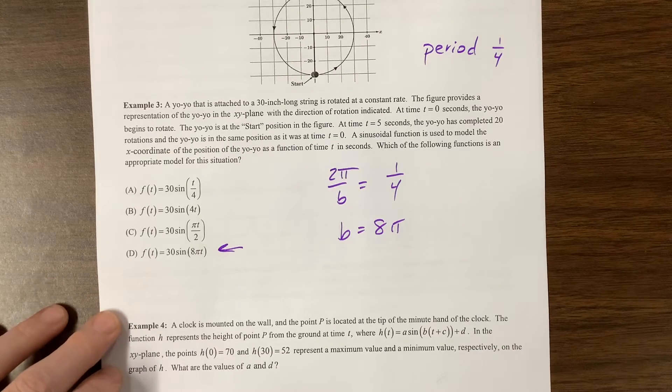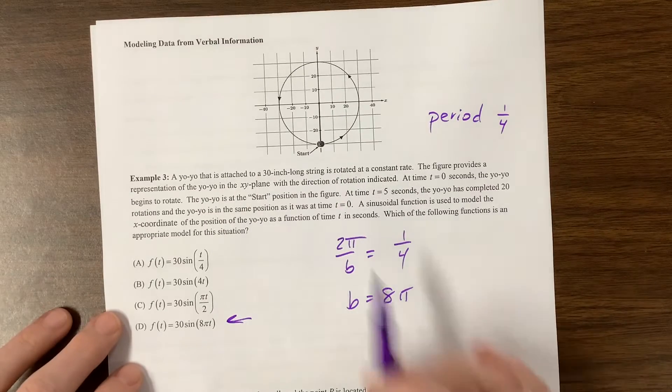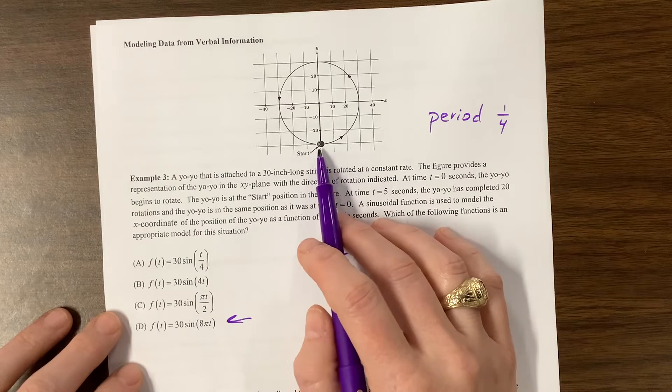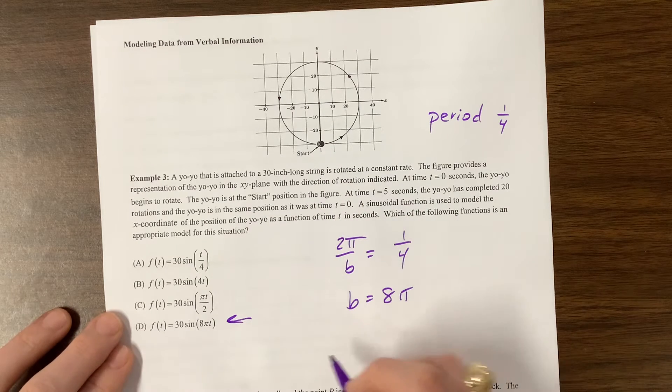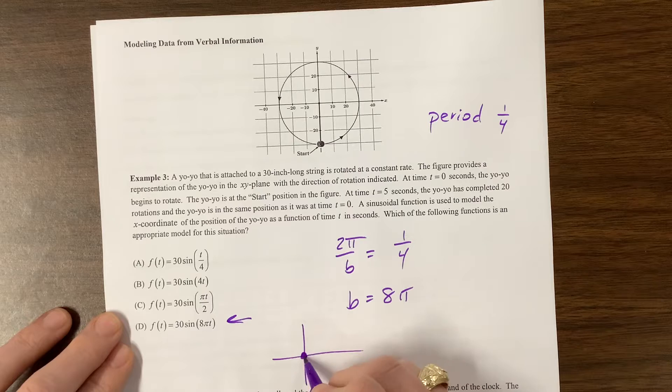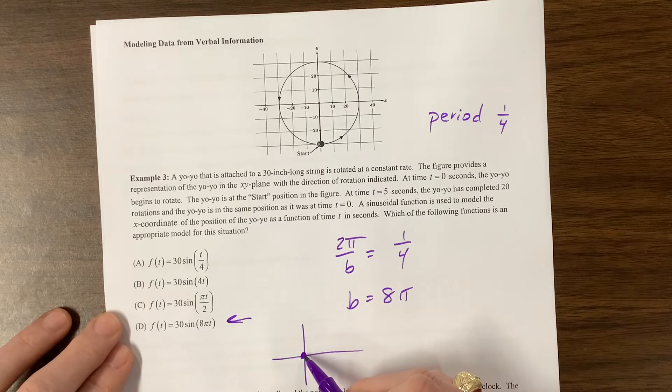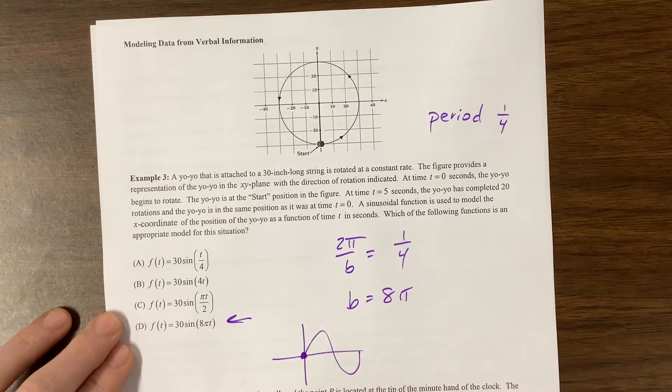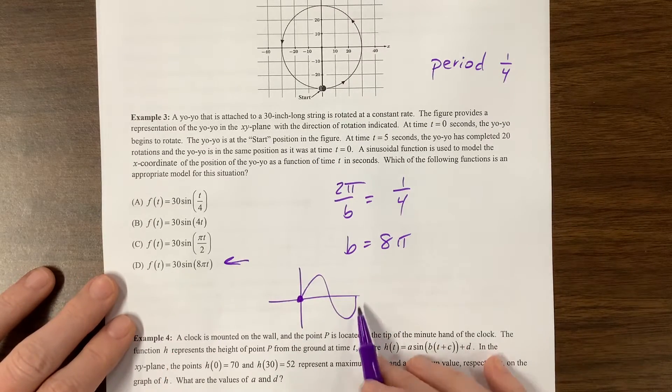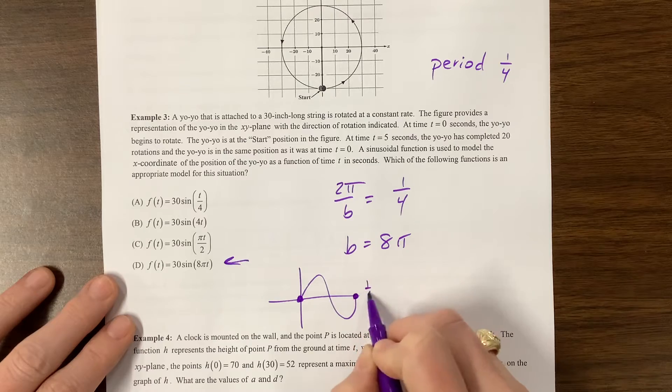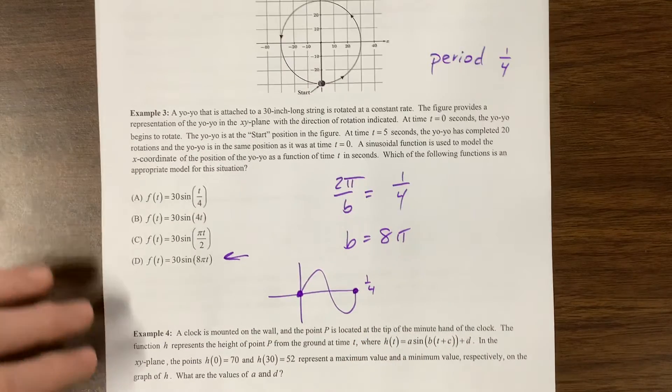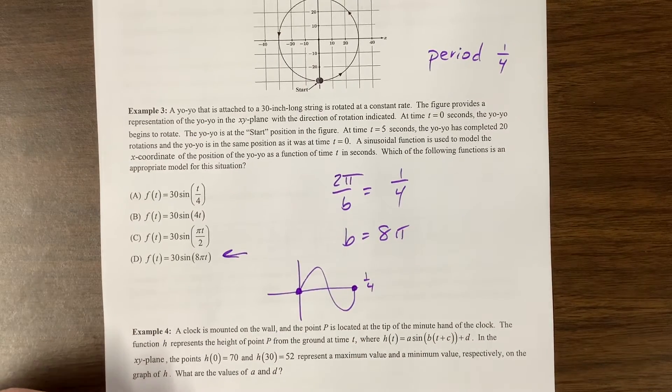The position of the yo-yo is a function of time. Sine function starts, like this would be starting here at zero. That's kind of a weird example. Our equation right here is going to do something like this, where it gets all the way back by one-fourth.